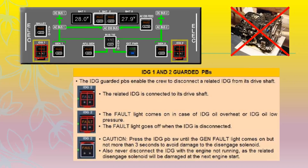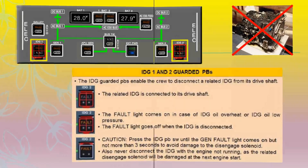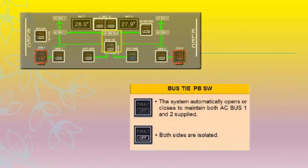Caution: press the IDG pushbutton switch until the generator fault light comes on, but not more than three seconds, to avoid damage to the disengaged solenoid. Also, never disconnect the IDG with the engine not running, as the related disengaged solenoid will be damaged at the next engine start.